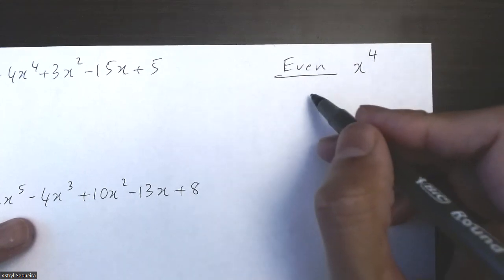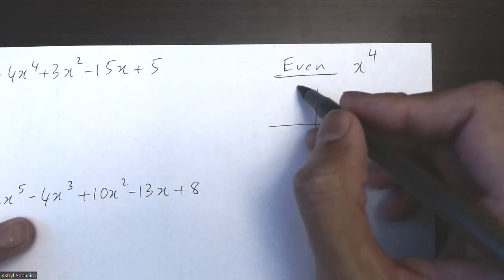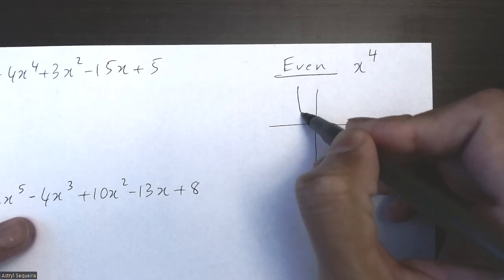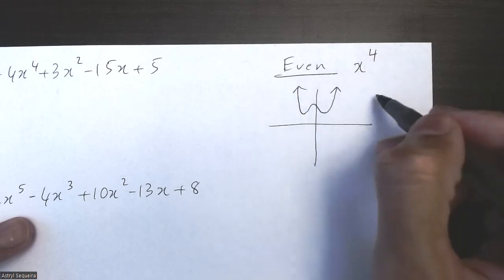So if I look at x to the power of 4, it can look quite a few different ways. But one possibility is that we have no zeros at all.